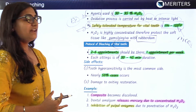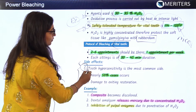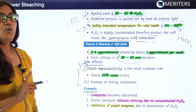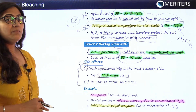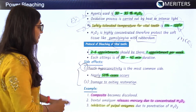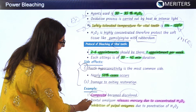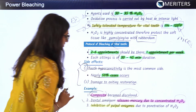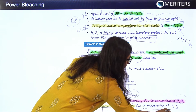The side effects or disadvantages of vital tooth bleaching: the first is tooth hypersensitivity, which is the most common side effect, occurring in nearly 50% of cases. There may also be damage to existing restorations — for example, composite can become discolored. Second, dental amalgam will release mercury due to the concentrated H2O2 used. Third, there may be inhibition of pulpal enzymes due to penetration of H2O2.